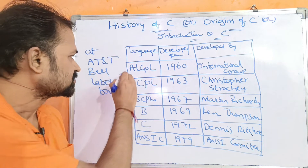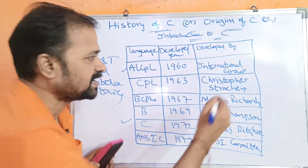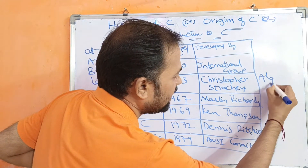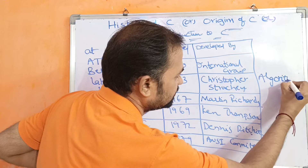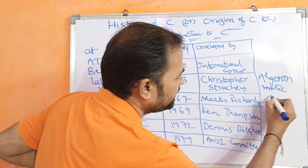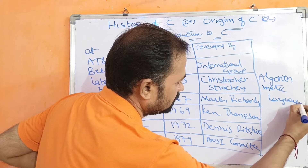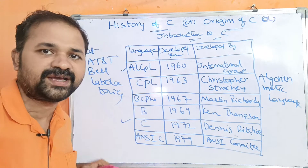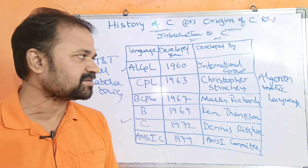The first one is ALGOL. ALGOL is algorithmic language.